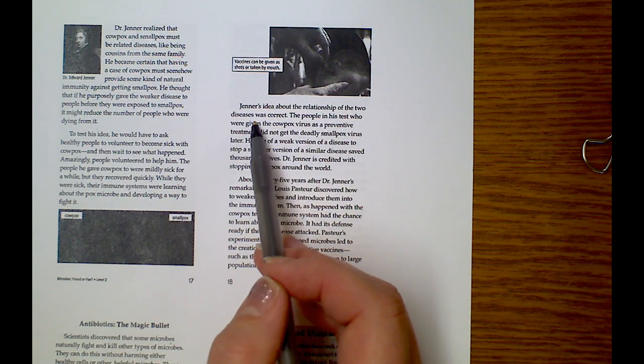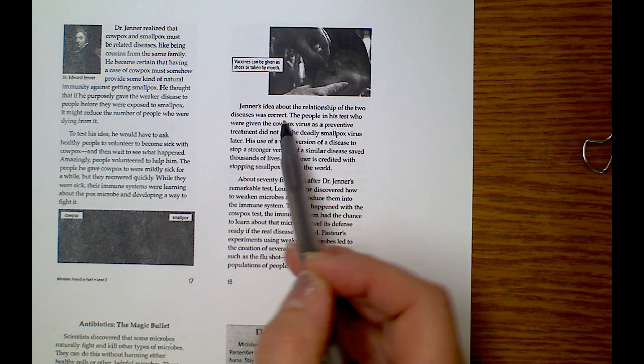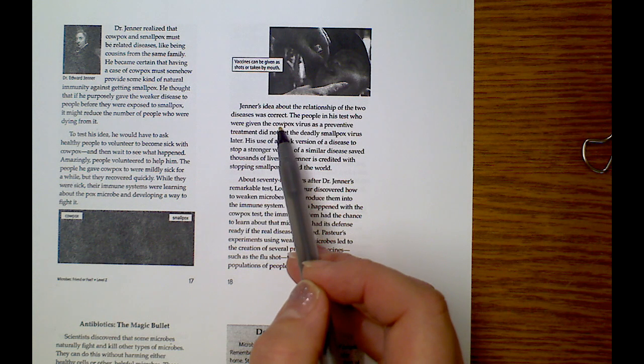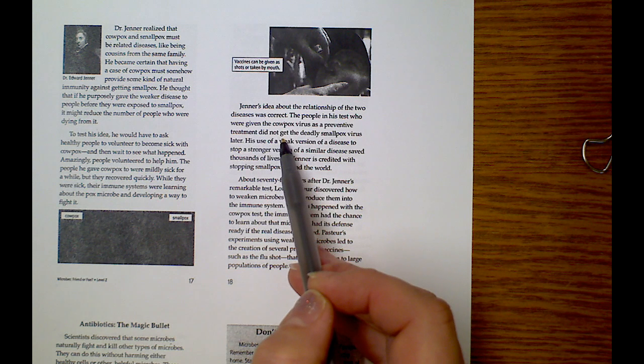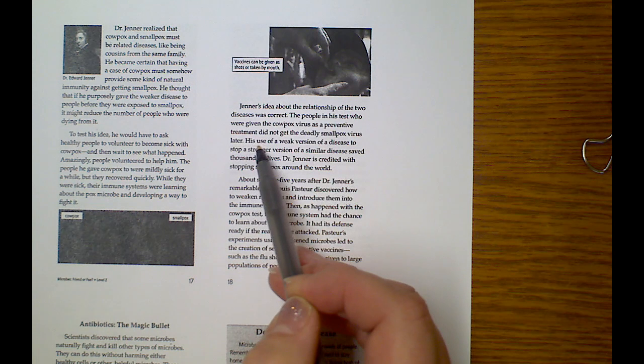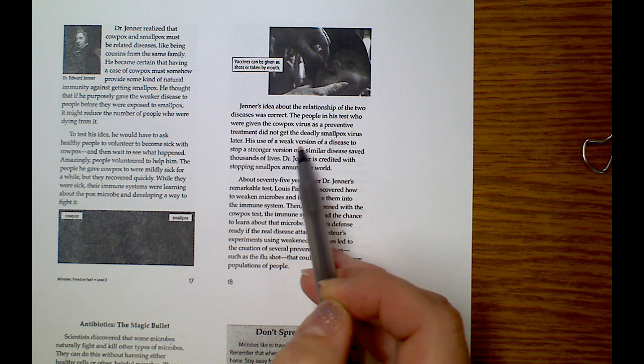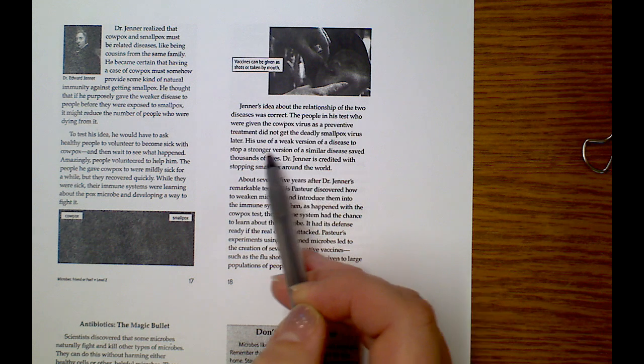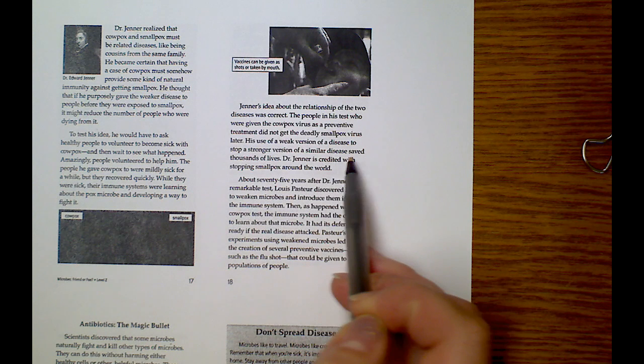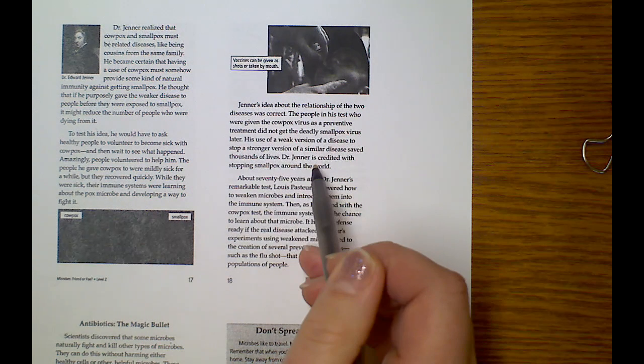Jenner's idea about the relationship between the two diseases was correct. The people in his test who were given the cowpox virus as a preventative treatment did not get the deadly smallpox virus later. His use of a weak version of a disease to stop a strong version of a similar disease saved thousands of lives.